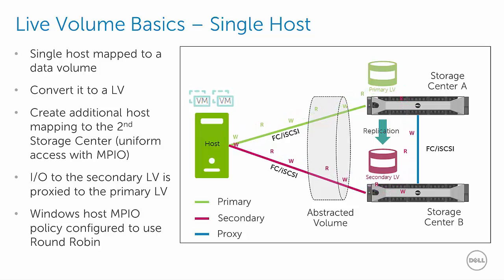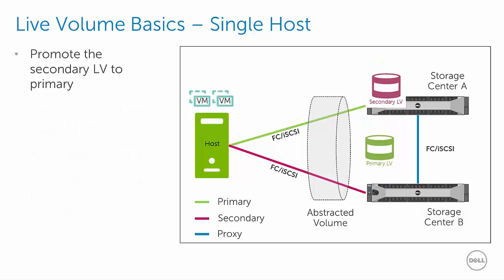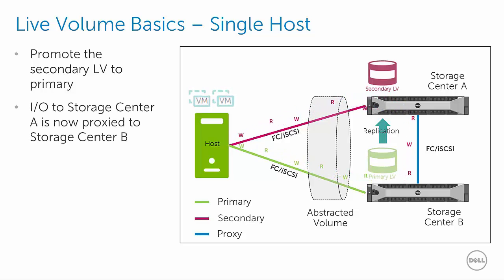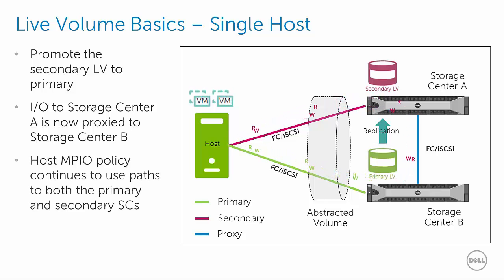This configuration is referred to as Uniform Access because the host is mapped to both storage centers and can therefore access the live volume through data paths configured to both storage centers. Now let's see what happens if we use the Dell Storage Manager client to perform a manual live volume role swap. I/O is paused briefly while the role swap takes place and then I/O is resumed. Now we can see that the primary data path is to the live volume on Storage Center B, while the I/O to Storage Center A now needs to be proxied to Storage Center B since Storage Center A now has a secondary live volume. The MPIO policy continues to utilize all available data paths in a round-robin fashion.